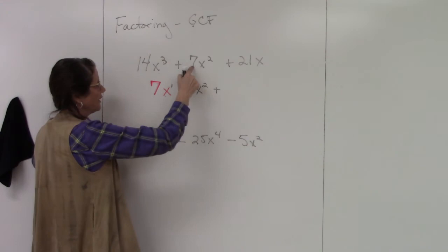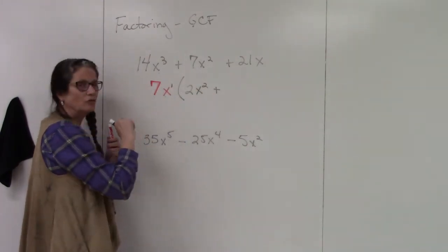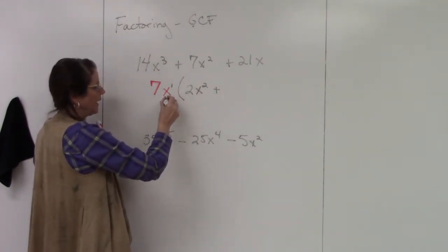So 7x from 14x³ is 2x². Use the same sign. 7 divided by 7 is 1. I don't need to write it. x² divided by x.